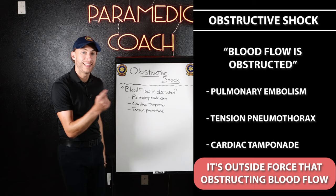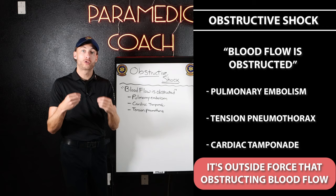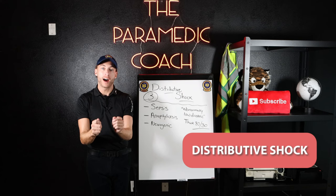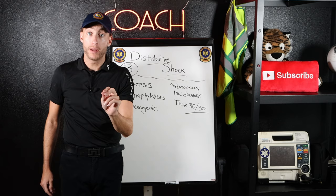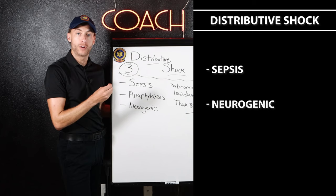Now we're moving on to distributive shock — a sneaky one. Distributive shock is the type that has three subtypes underneath it: sepsis, neurogenic, and anaphylaxis.